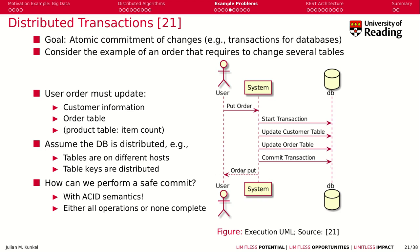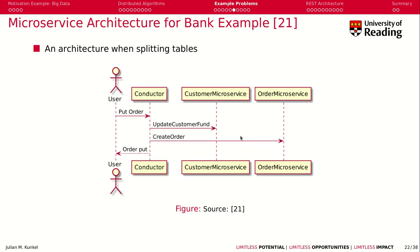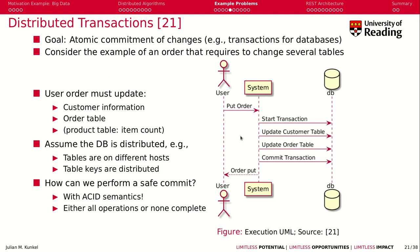The user gets the answer: 'Your order has been placed' or 'there was a problem, please retry.' The goal is to make a safe commit of this whole transaction using ACID transaction semantics we know from databases — either everything happens or none.